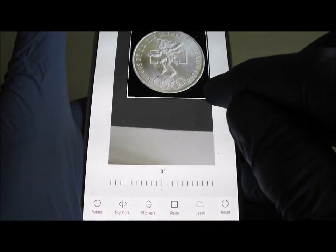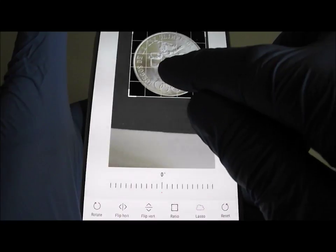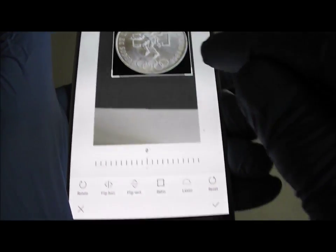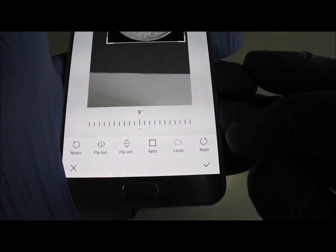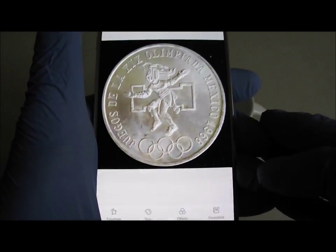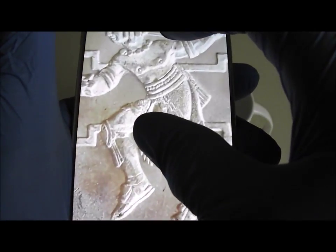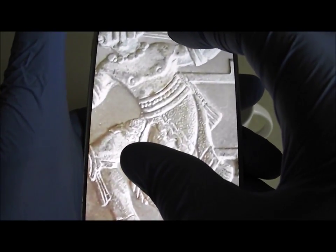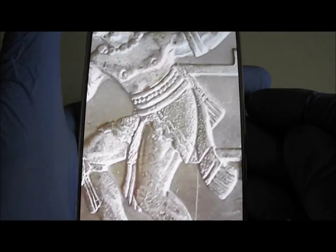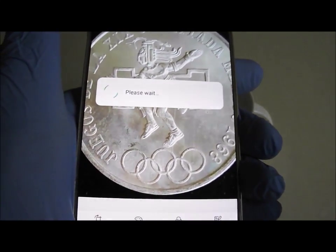I'm just going to move that box around until the coin virtually fills that box, it's nice and central or roughly central for this video, and then save it. As you can see there you get a nice clear picture when I zoom in of all the details. I'm going to save that photograph.